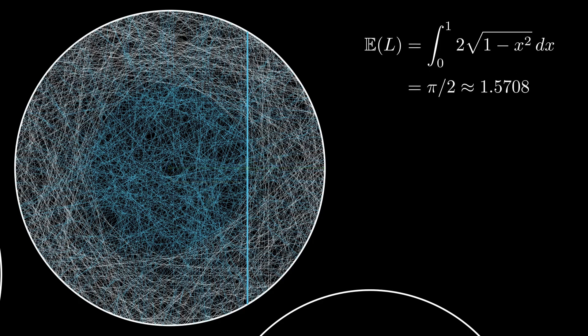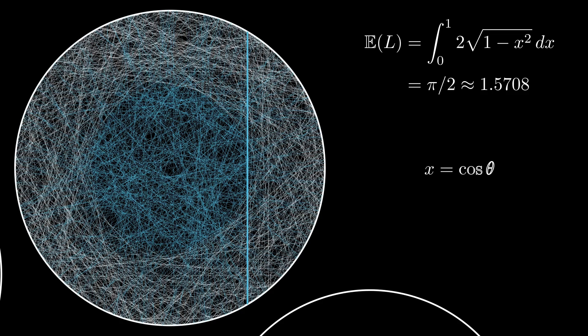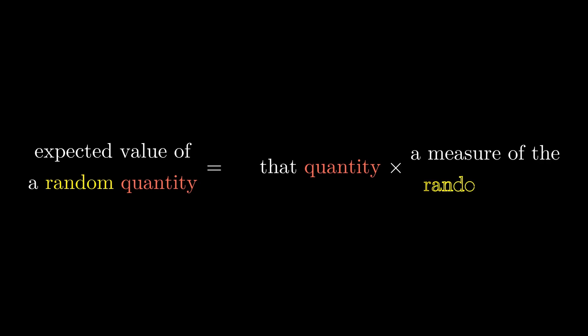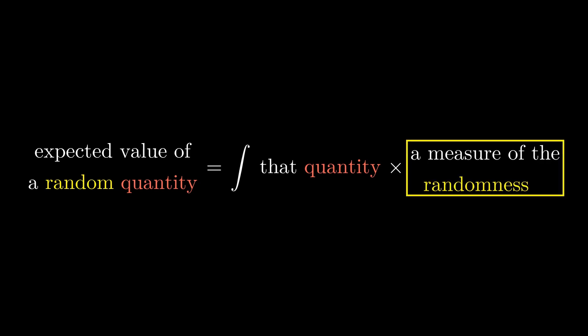But here's something interesting. If we use x = cos θ in the above integral, the integral transforms to 2 sin θ times sin θ. The expected value of any random quantity is that random quantity times the measure of that randomness over all points on the sample space.